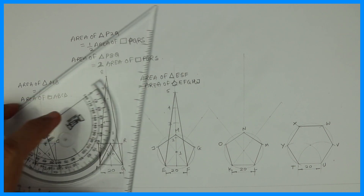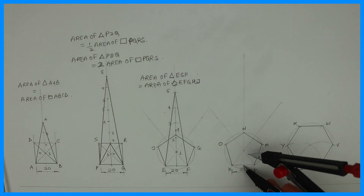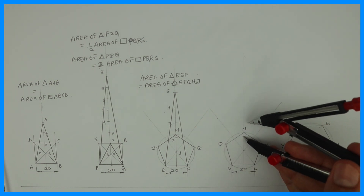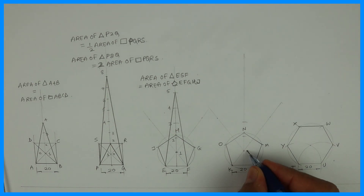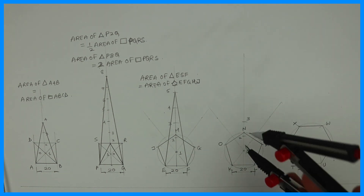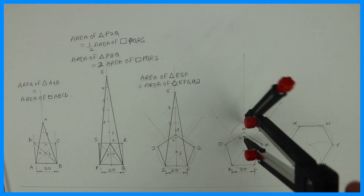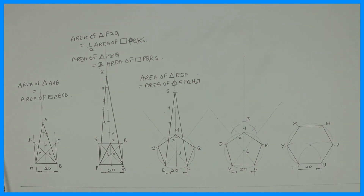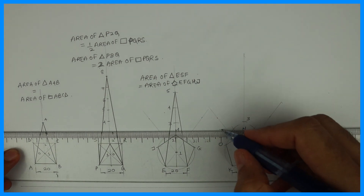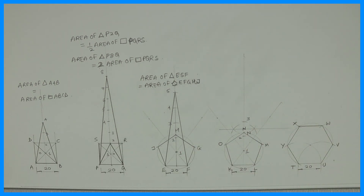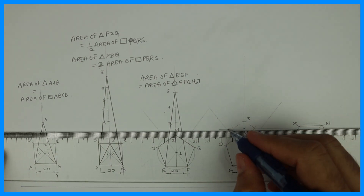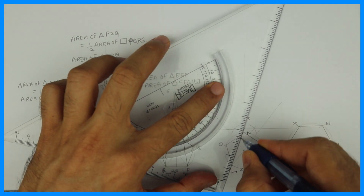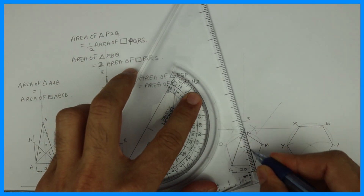Again, the idea is: whatever shape we have, count how many triangles it's made of — like pentagon is five triangles. Now if I want half the area, then I'll go two and a half times. I count one, two, three, then bisect between two and three to get two and a half. So this is half the area of the pentagon.